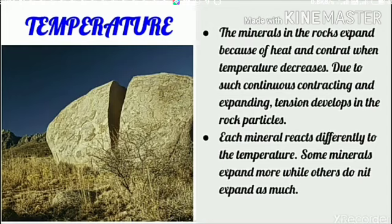First, temperature. The minerals in the rocks expand because of heat and contract when the temperature decreases. Due to such continuous contracting and expanding, tension develops in the rock particles. Each mineral reacts differently to temperature, so some minerals expand more whereas others do not expand as much. Consequently, the tension formed in the rocks increases and decreases due to temperature — means the contraction and expansion. This process continuously goes on.